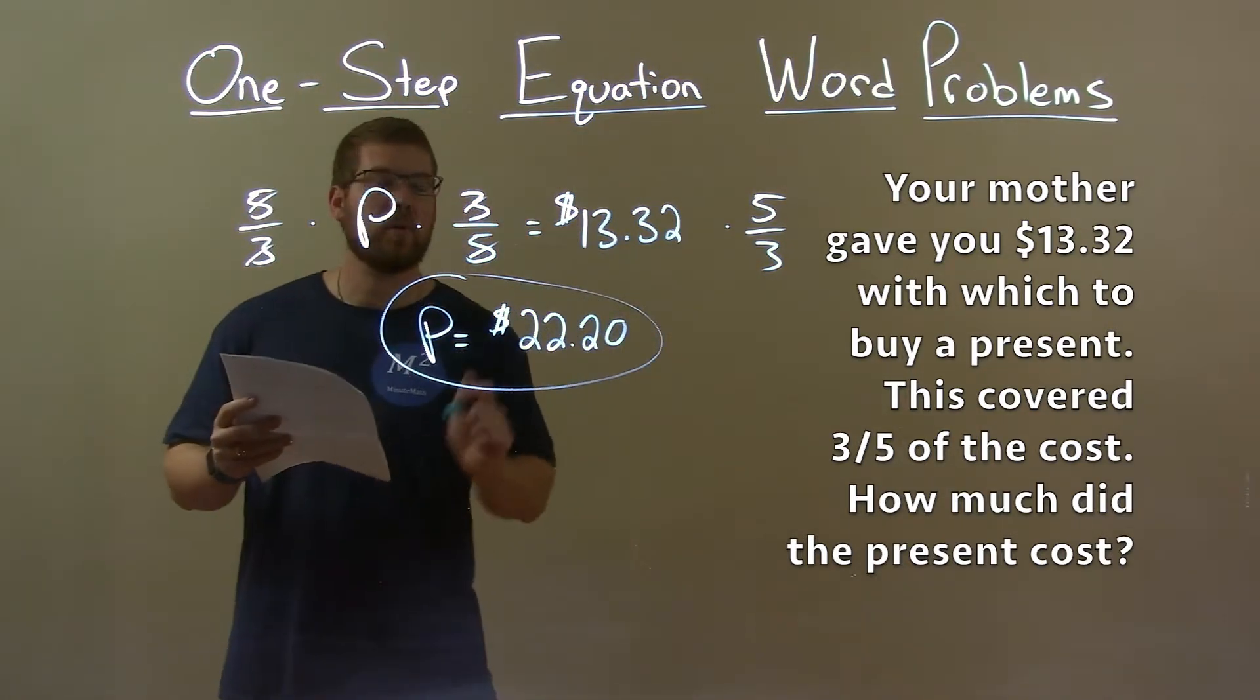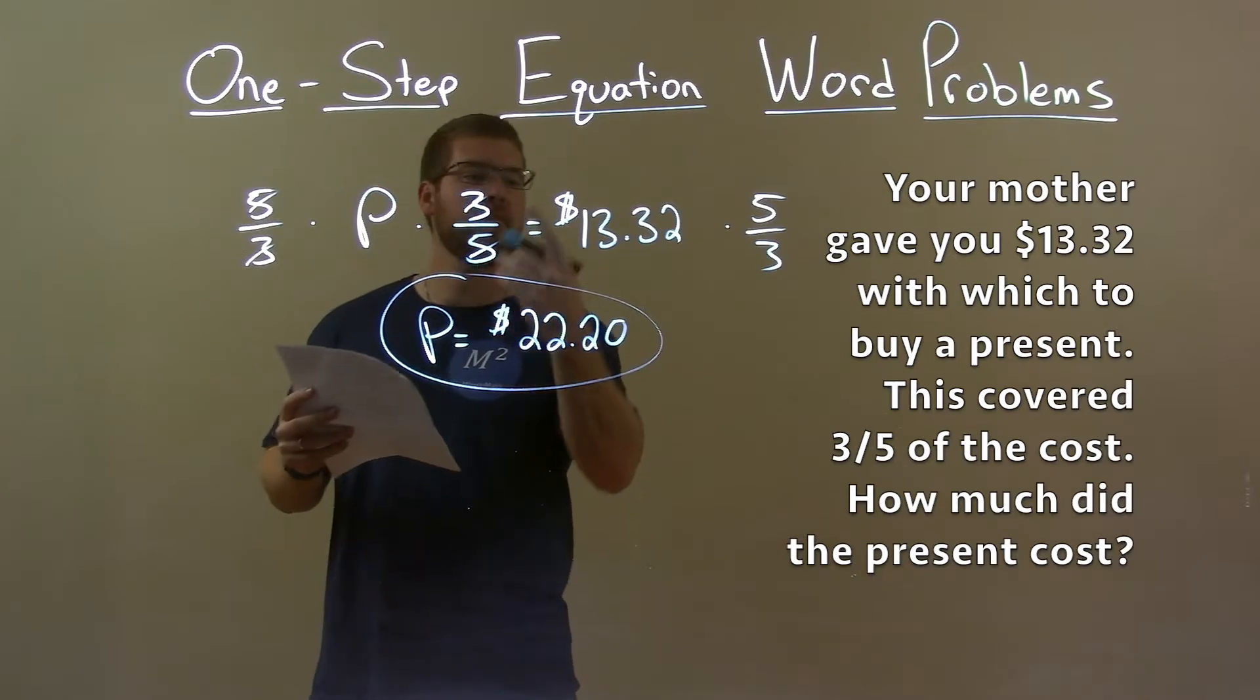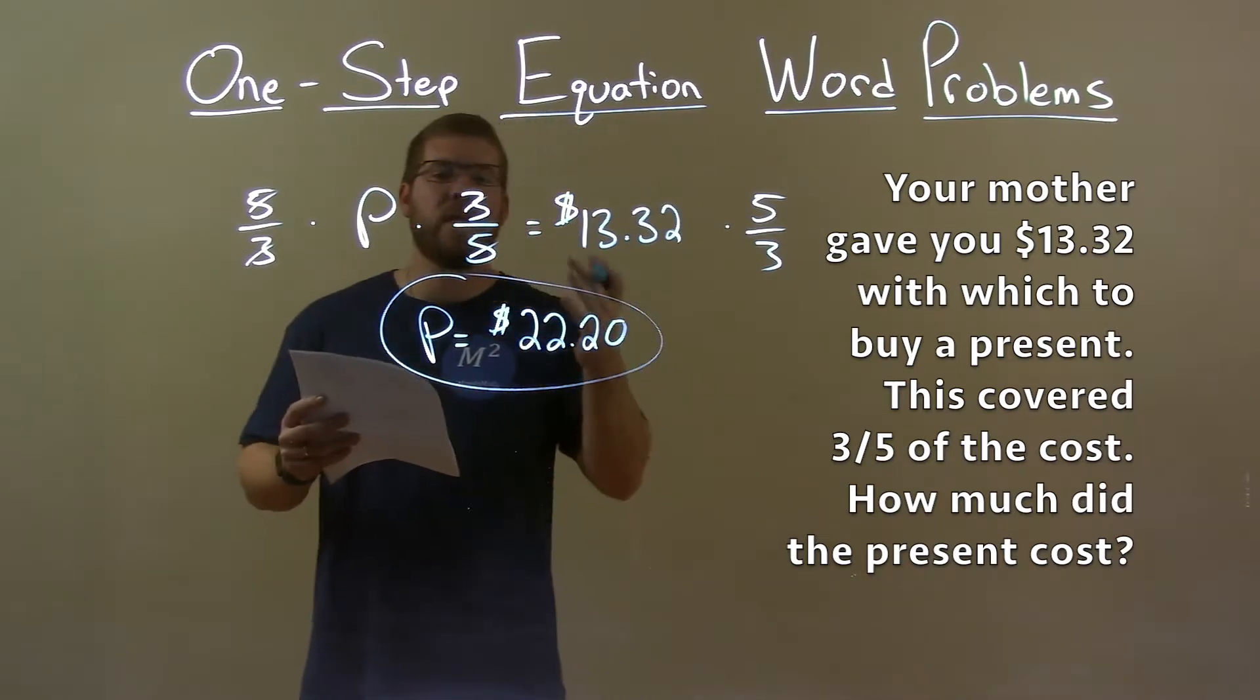With that information, we created an equation. P times three-fifths equals $13.32. Then we solve for P.